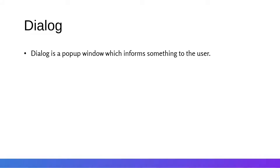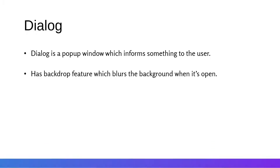The next component we'll be talking about is the Dialog. A dialog is a pop-up window which informs the user of something. It can ask for permission or confirmation on an action the user has requested, or it can have multiple tasks related to it — like when we close an application and see a pop-up window. It also has a backdrop feature which blurs the background when it's open.